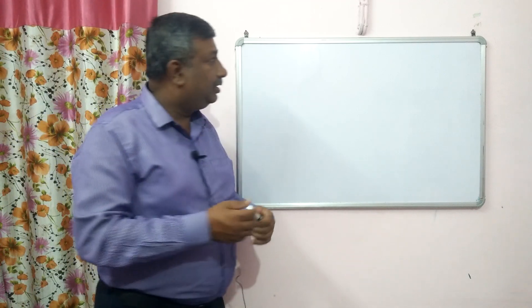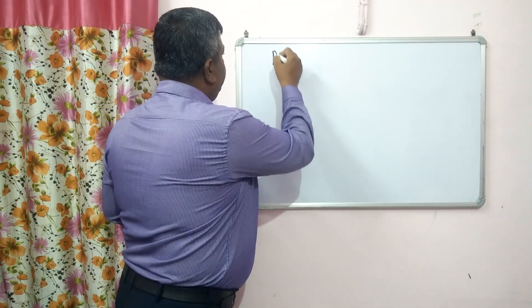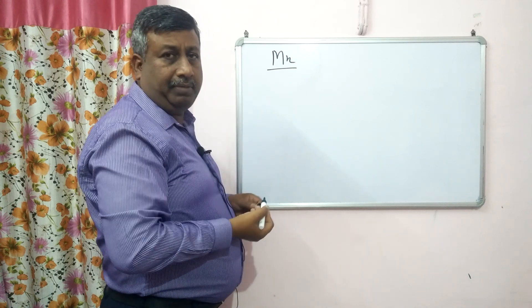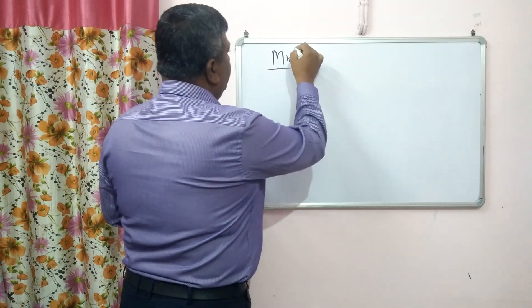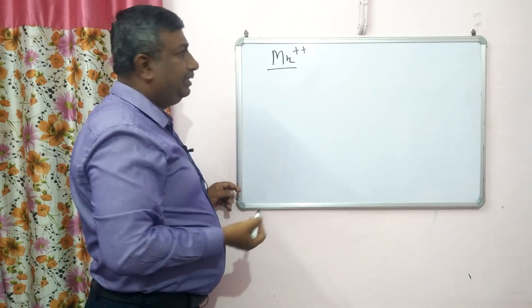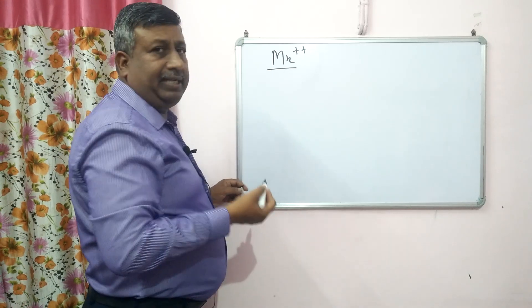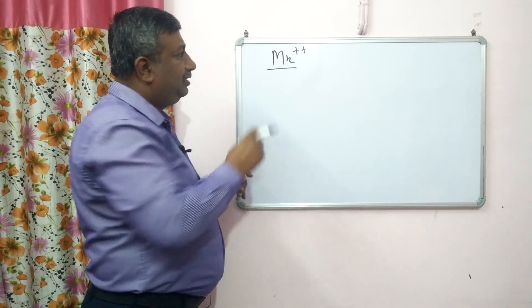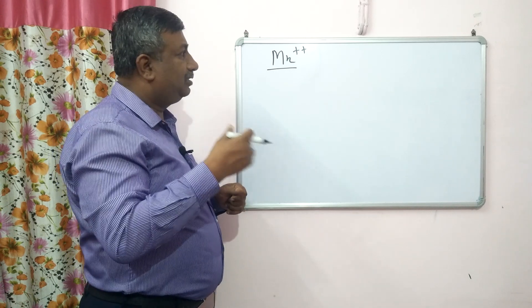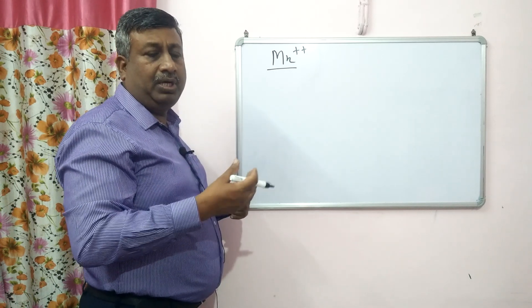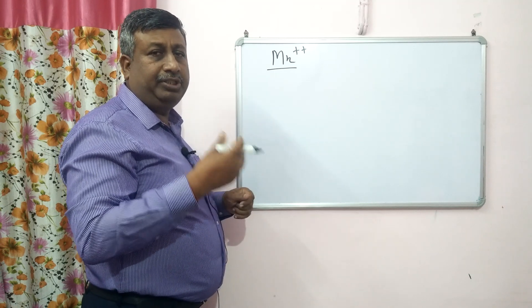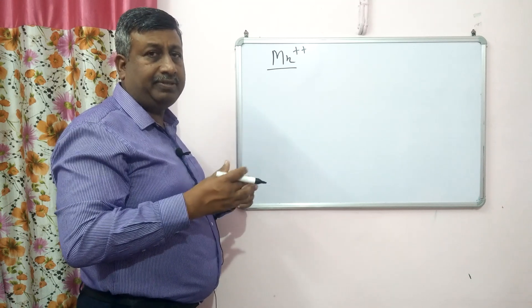First, about manganese: it is an essential micronutrient and the plant-available form is the divalent cation Mn²⁺. If it is present in this form in soil solution, then it is available. If it is converted to hydroxide or oxide forms, then availability is reduced because solubility is less.